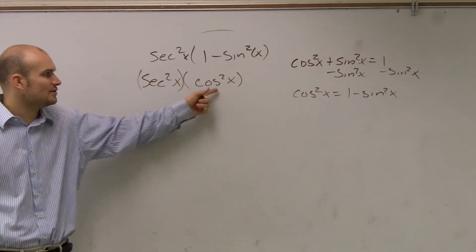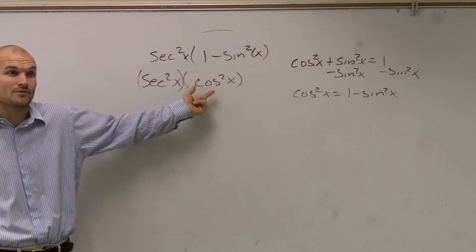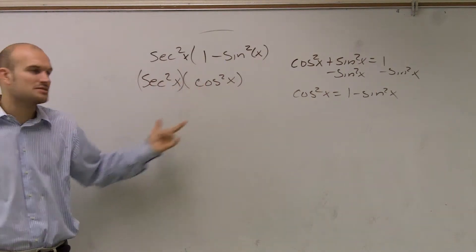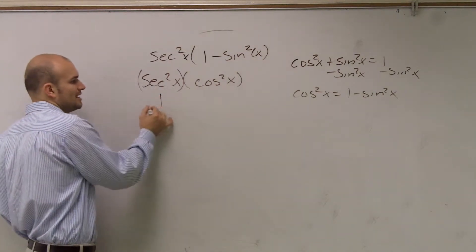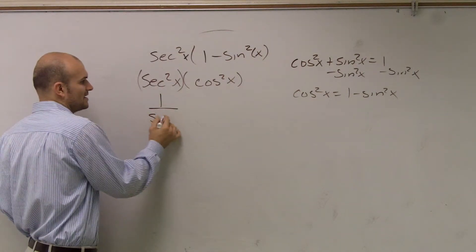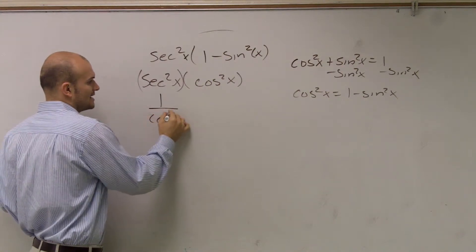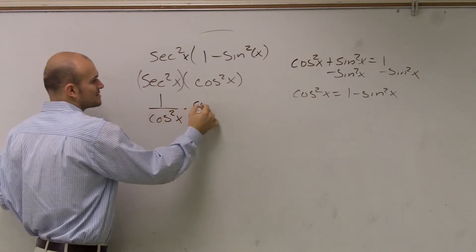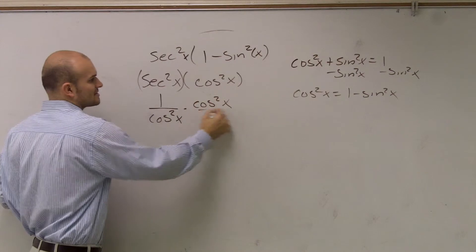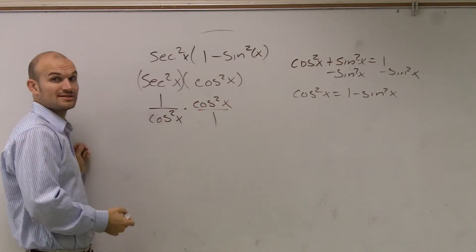And why would I want to do that? You could rewrite cosine if you wanted to, but there's multiple ways to do this. You've got to just be thinking, if I can rewrite this as 1 over cosine squared times cosine squared, some magic is going to happen.